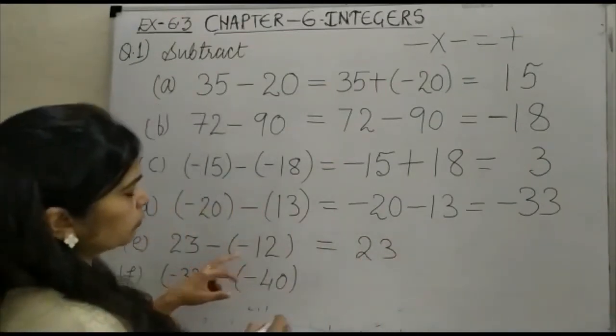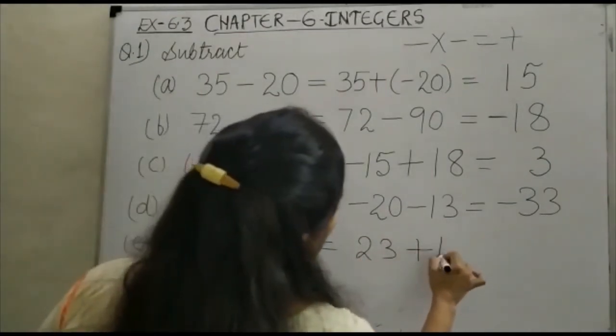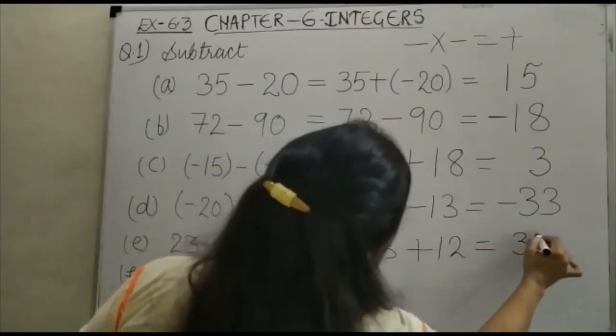Once again, minus into minus plus. So it is plus 12 and this is equal to 35.